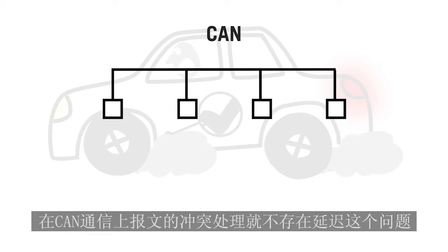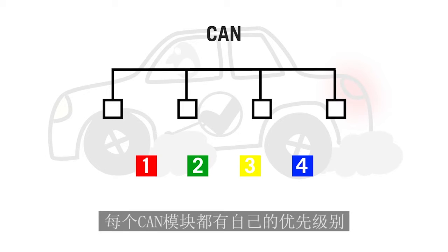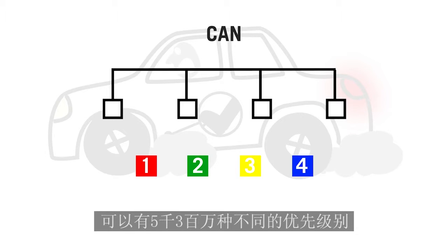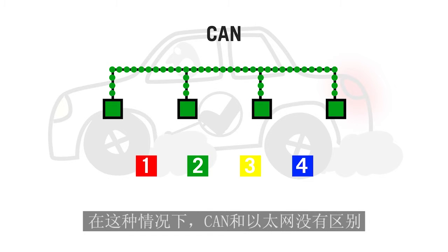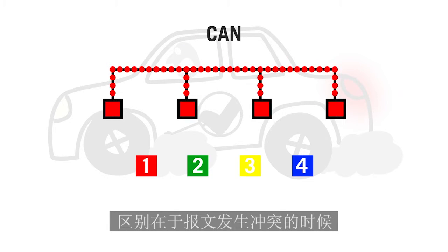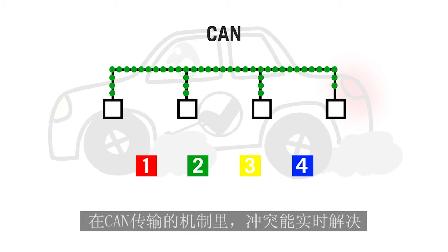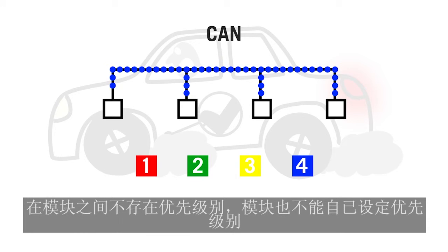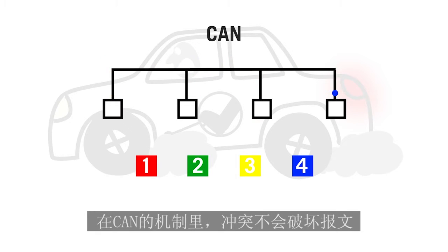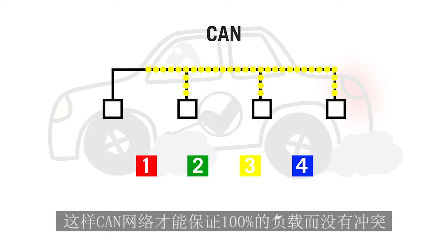With CAN, collisions are solved without any delay. In CAN, every package has a priority level. There can be up to 53 million different priority levels in CAN. In this example, we only show four levels. As soon as there is no traffic on the CAN bus, any unit can send a package — at this point, CAN functions the same as Ethernet. The difference occurs when there is a collision: in CAN, the collision can be resolved in real time because the highest priority package will be sent first. There is no priority between the different units, and a unit can send packages with different priorities. CAN is designed in such a way that no bit is lost during a collision, making it possible to have 100% busload without causing any delays.